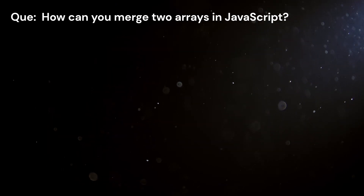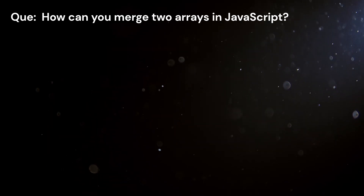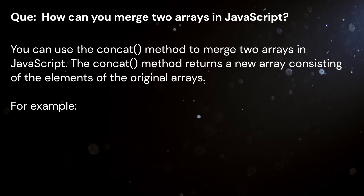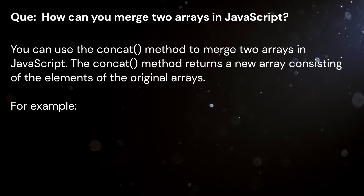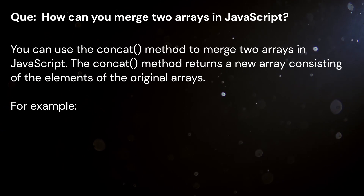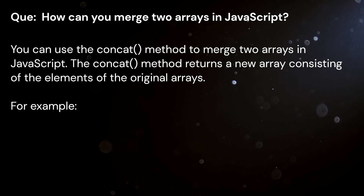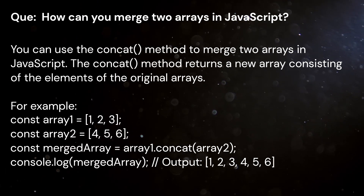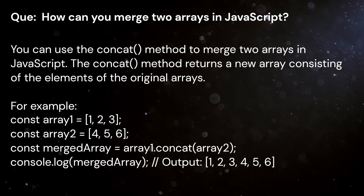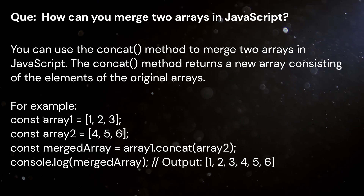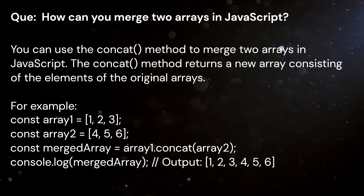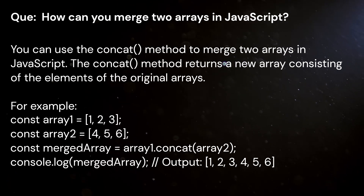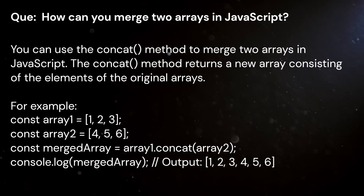Question: How can you merge two arrays in JavaScript? Answer: You can use the concat method to merge two arrays in JavaScript. The concat method returns a new array consisting of the elements of the original arrays.